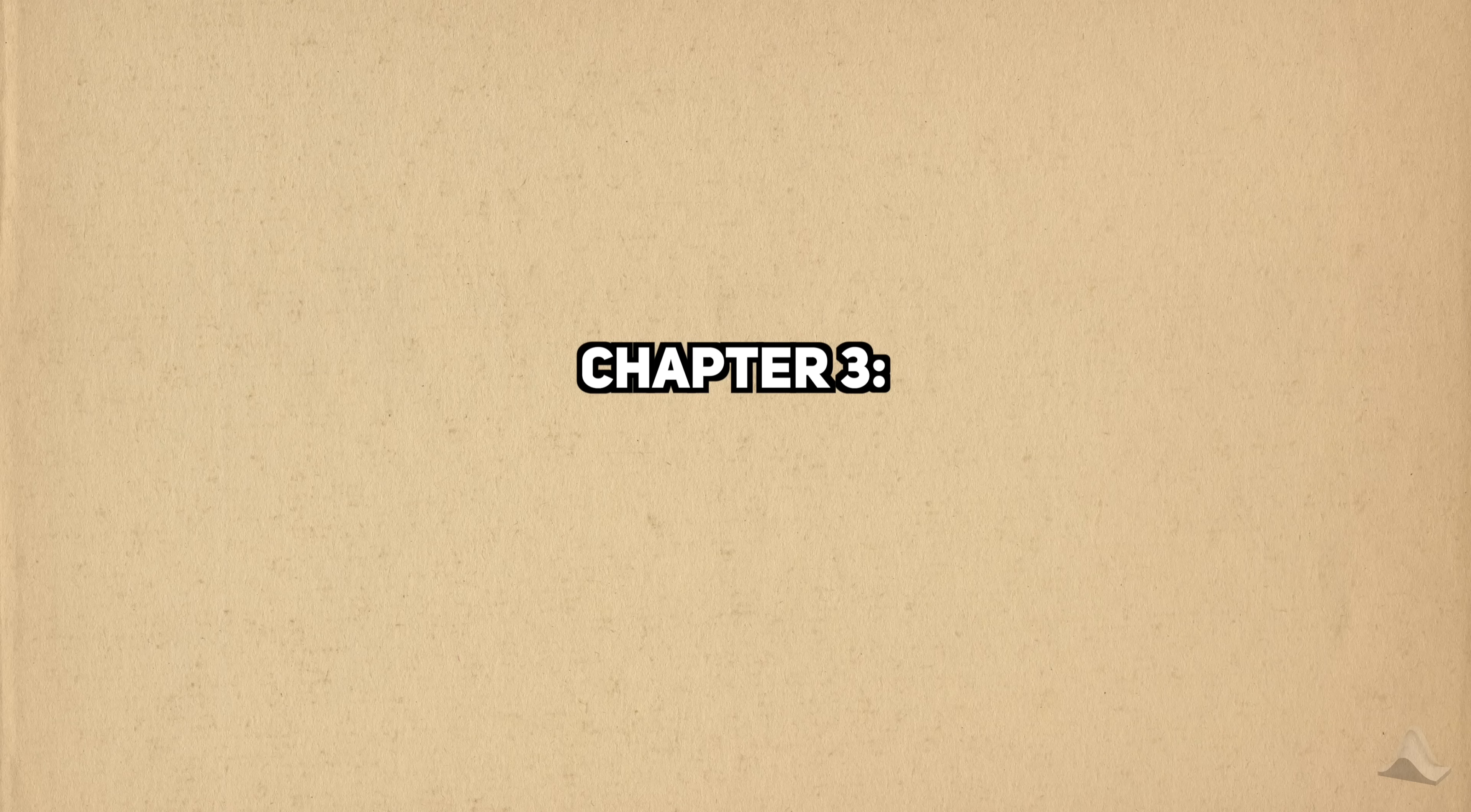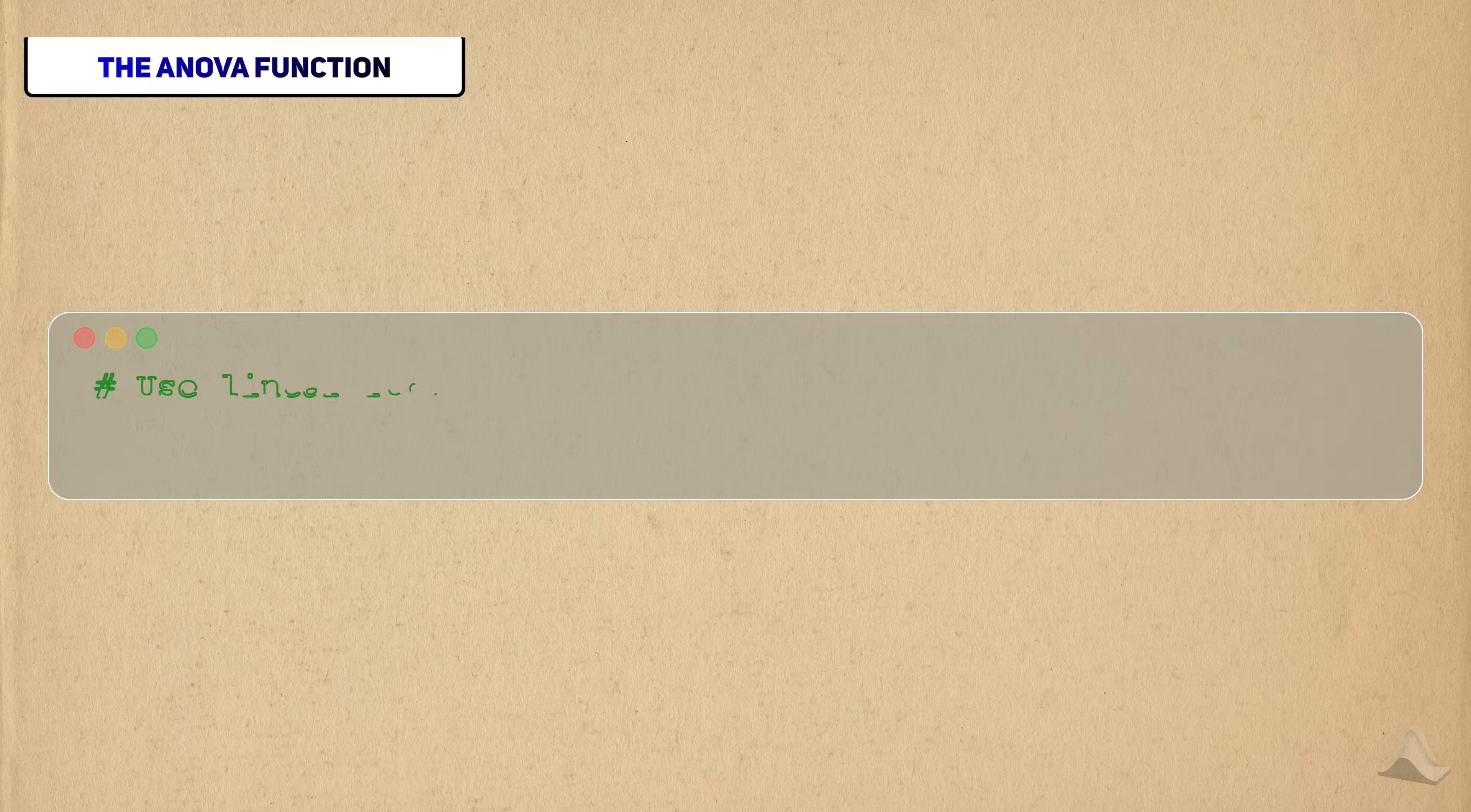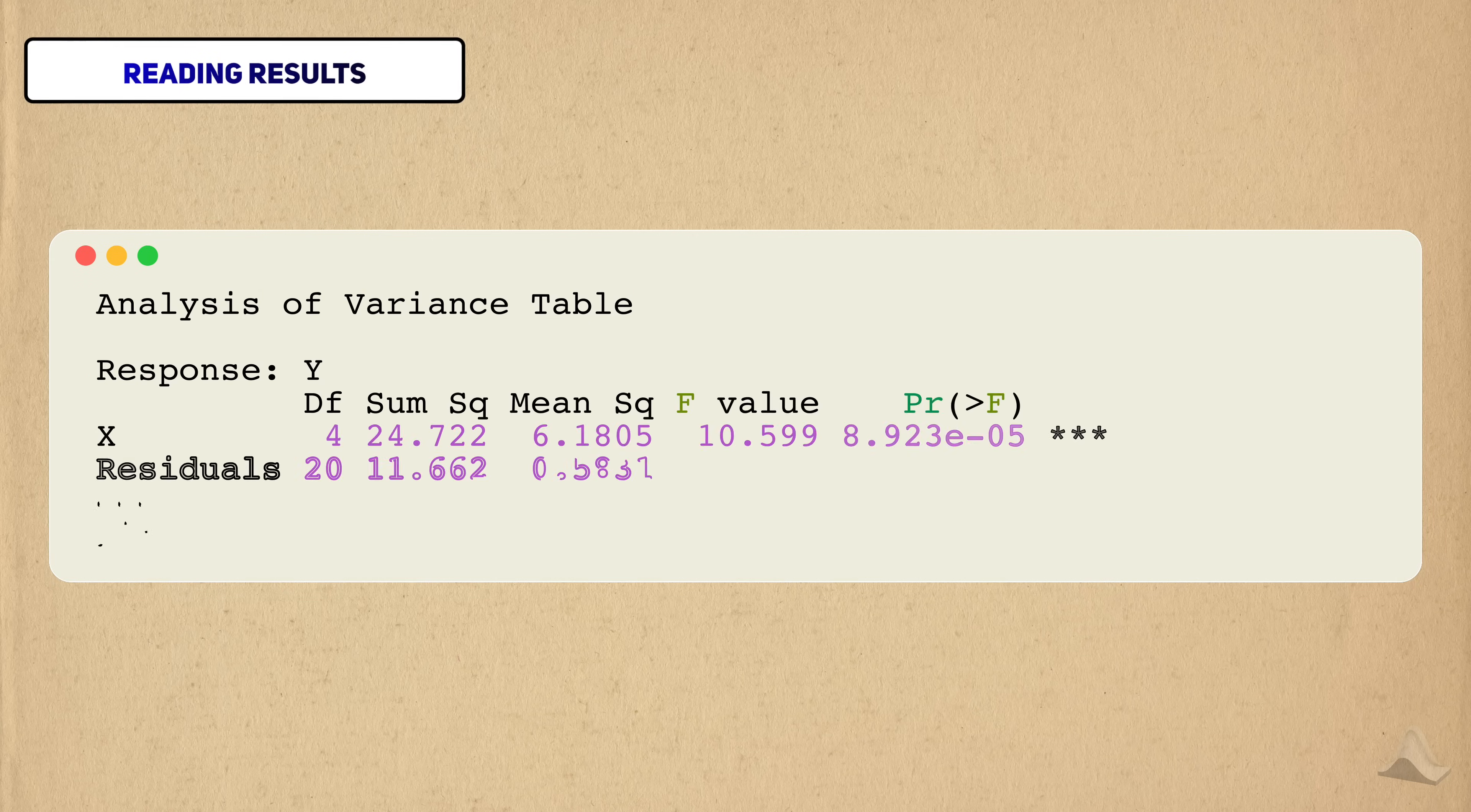Now that we know what the ANOVA is, let's see how to implement it in code. The first thing we need to do is organize our data in a data frame. One column should contain the outcome, and a second column should identify what group an observation belongs to. And I'm purposefully simulating it so that one of the groups has a smaller mean than the others. The function that implements ANOVA is also called ANOVA. First, we need to create a linear regression model. An ANOVA is actually a special form of a linear regression. For convenience, we'll store the model in its own variable. Next, all we need to do is provide the model to the ANOVA function, and the analysis will be run for us.